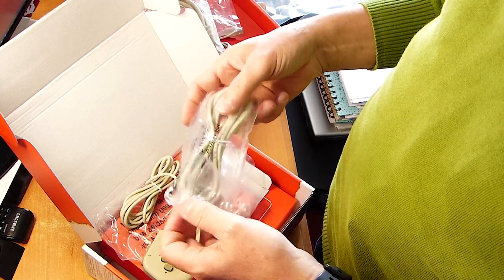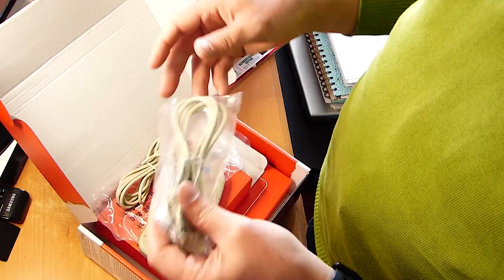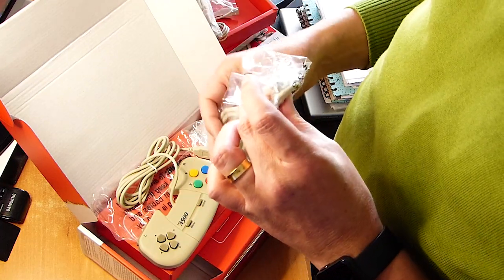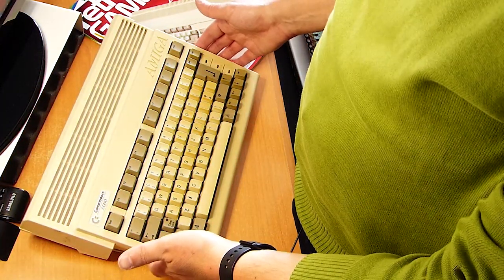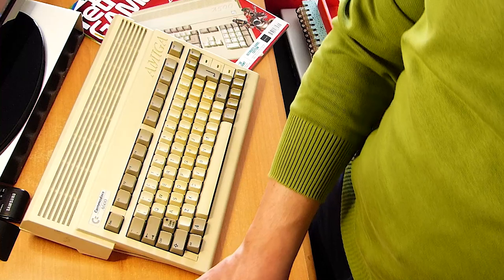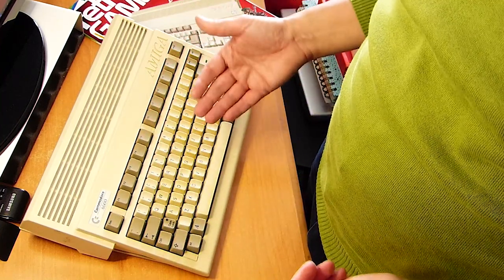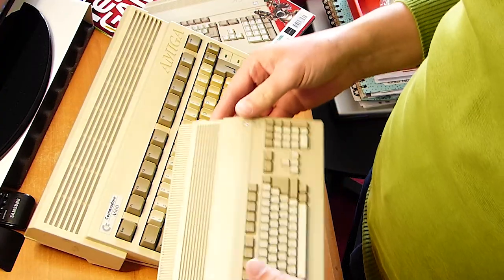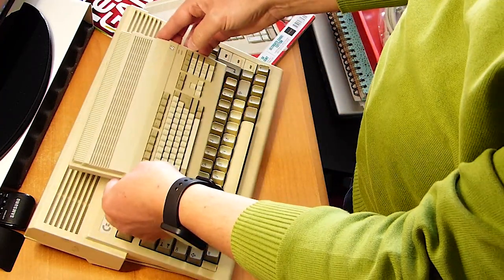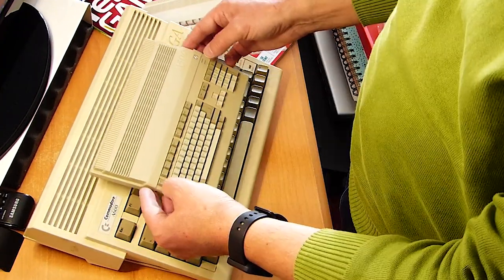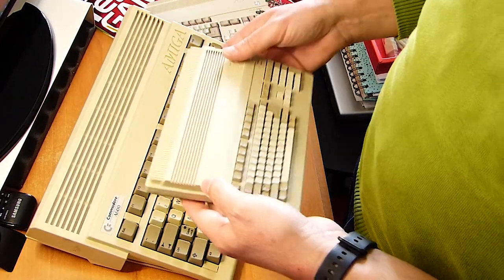I believe that I have a spare one here. I have the A600, the original A600, the smallest Commodore Amiga out there until this one arrived. Yeah, so it's slightly smaller. Look at this.